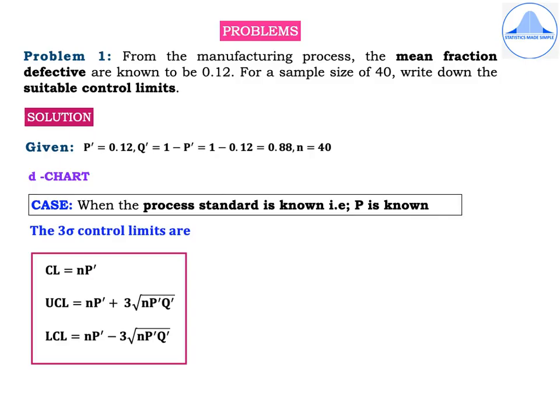Problem 1: From a manufacturing process, the mean fraction defective is known to be 0.12. For a sample size of 40, write down the suitable control limits. Read the sentence carefully — they have considered the entire manufacturing process and the mean fraction defective is given to us. So this is a case when the process standard is known, that is capital P is known.